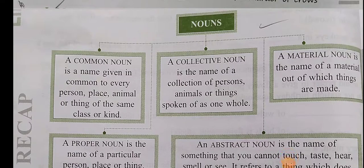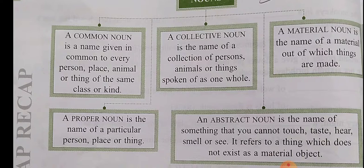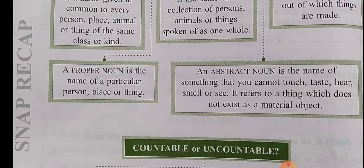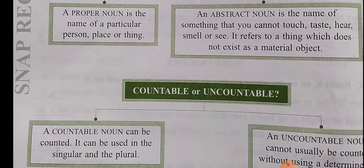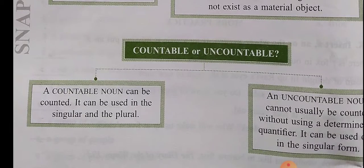Now let us recall the five types of nouns. First, proper noun — the name of a particular person, place or thing. A common noun is the name given common to every person, place, animal or thing of the same class or kind. A collective noun is the name of a collection of persons, animals or things spoken of as one whole. A material noun is the name of the material out of which things are made. An abstract noun is the name of something that you cannot touch, taste, hear, smell or see — it refers to things which do not exist as material objects. Nouns can be classified into countable and uncountable. A countable noun can be counted and used in singular or plural. An uncountable noun cannot usually be counted without using a quantifier, and is used in singular form.